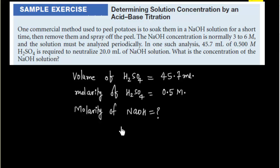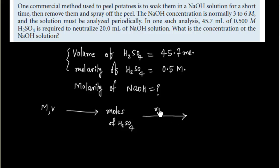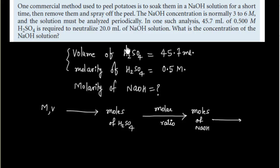What should be the plan to do this problem? We have been given molarity and volume of H₂SO₄, so we can multiply them to calculate moles of H₂SO₄. Once we know the moles of H₂SO₄, we write the reaction and use the molar ratio to calculate moles of NaOH. Then, since we know the volume of NaOH, we can calculate its molarity.